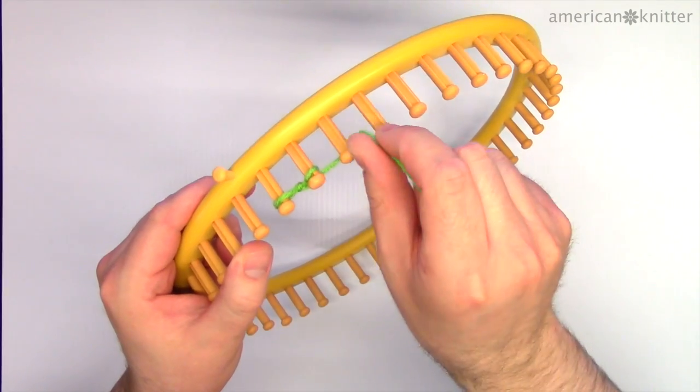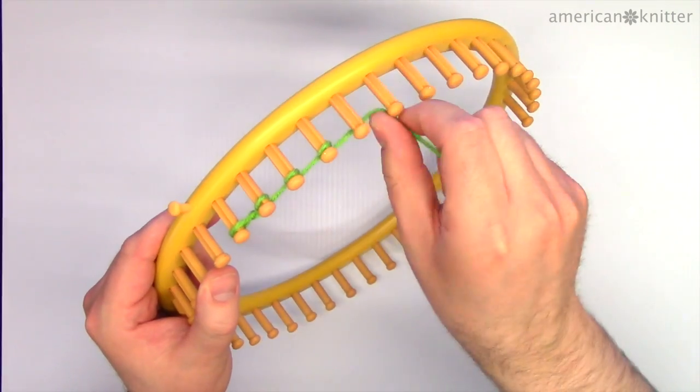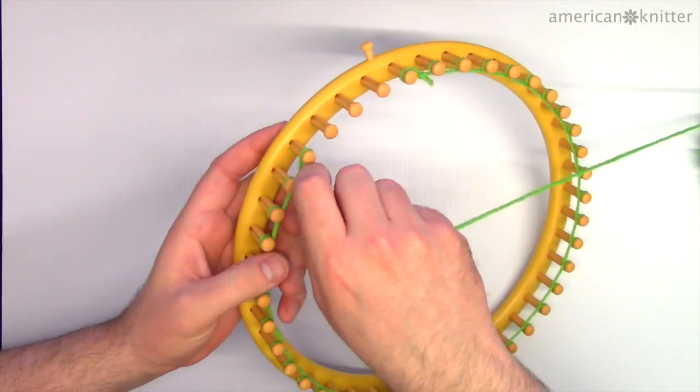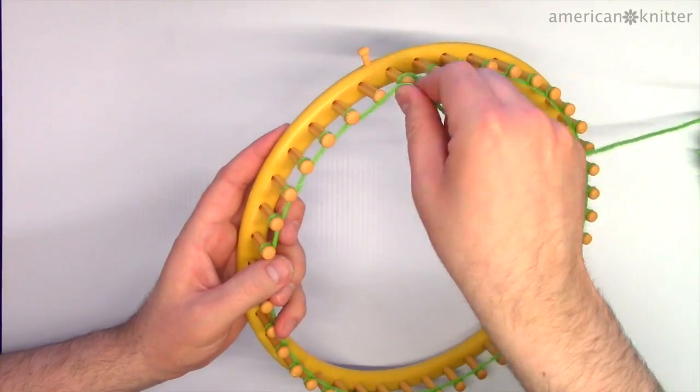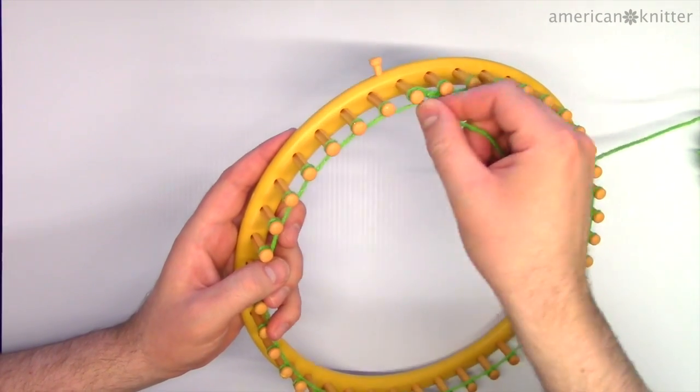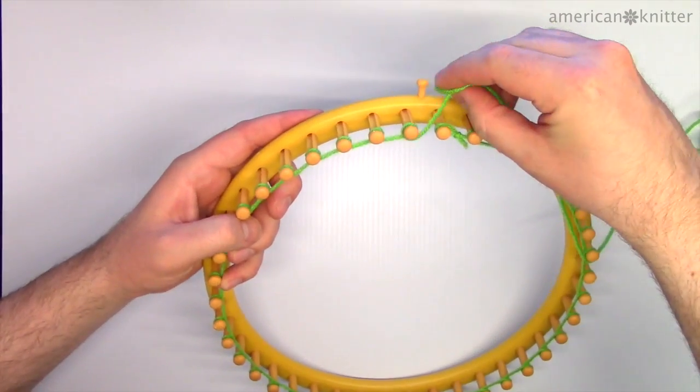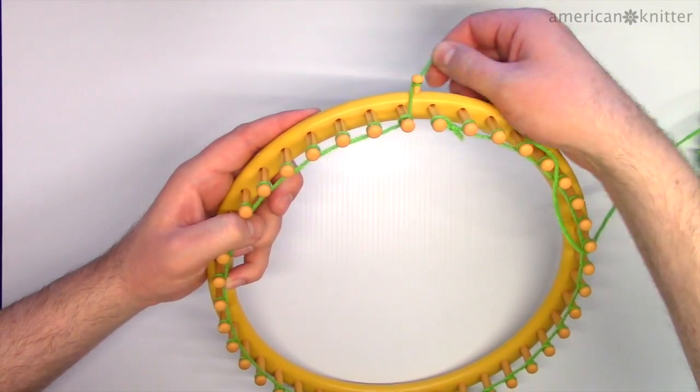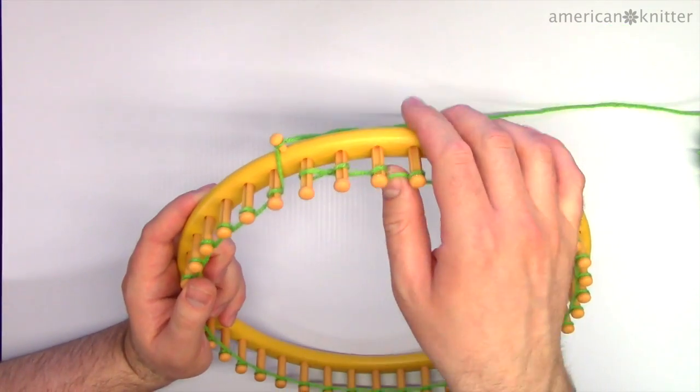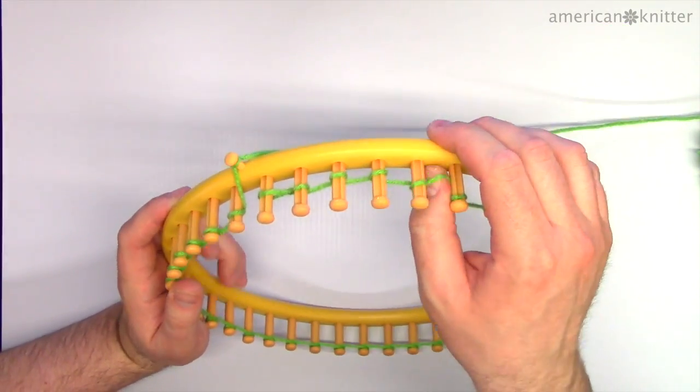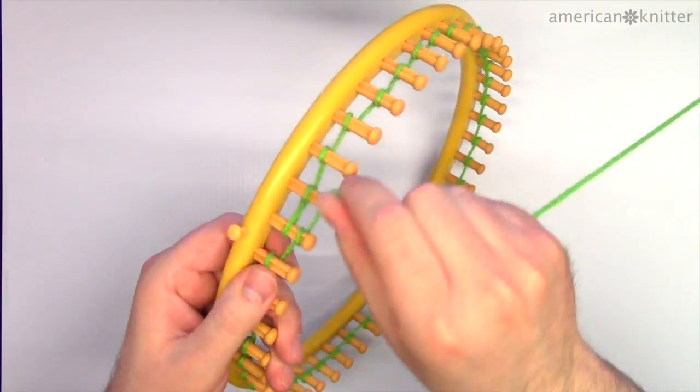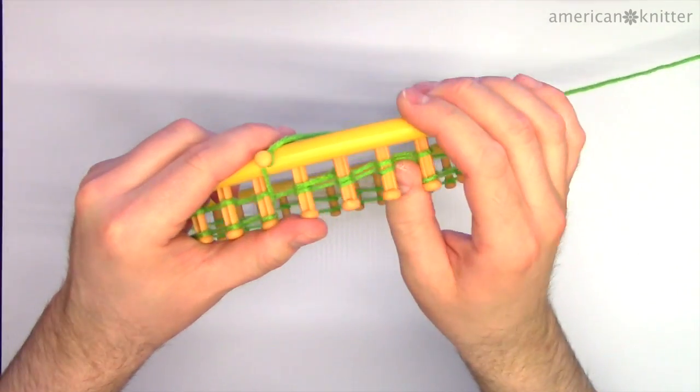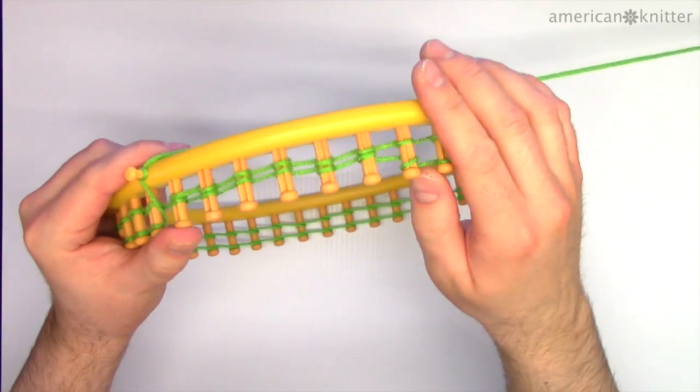We'll now wrap each peg counterclockwise as we work in a clockwise direction around the loom. Once every peg is wrapped, you can temporarily tie off the yarn on the side peg. I just wrap the yarn around my finger and then transfer it onto the peg like this. Then push the yarn down on each peg in order to make room for another row of yarn. Wrap the loom with the second row of yarn and push it down as before. Continue wrapping until you have three rows of yarn on the loom.